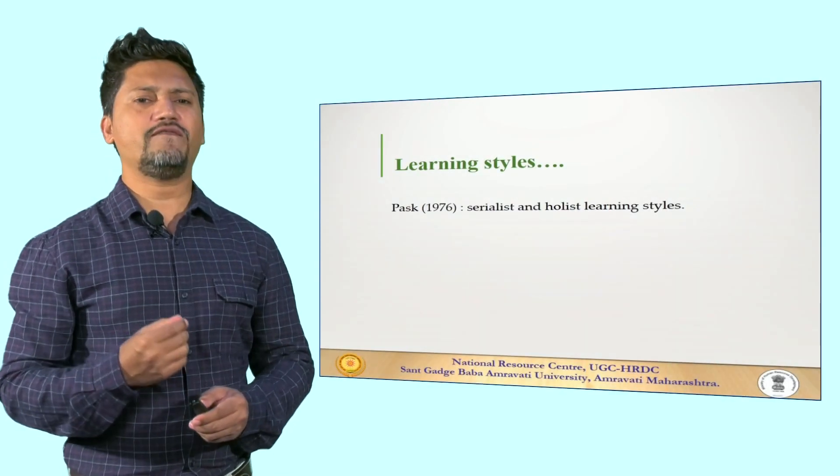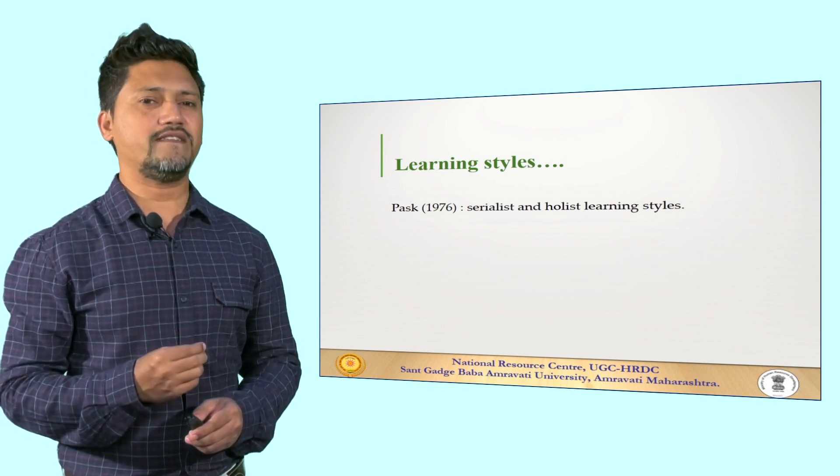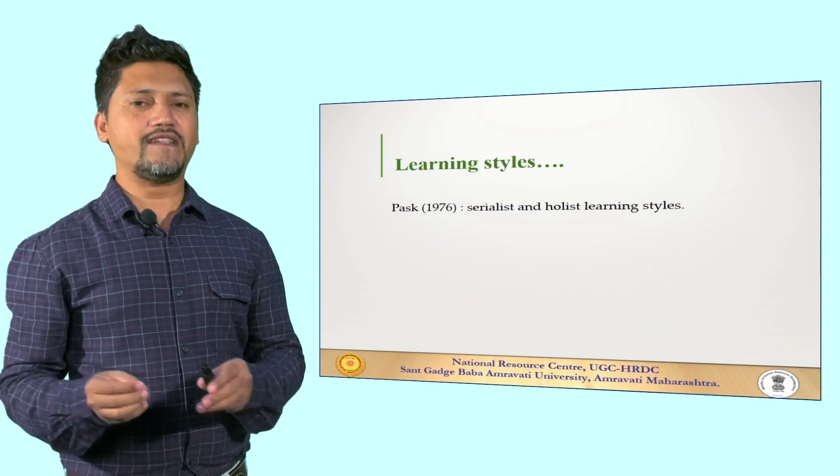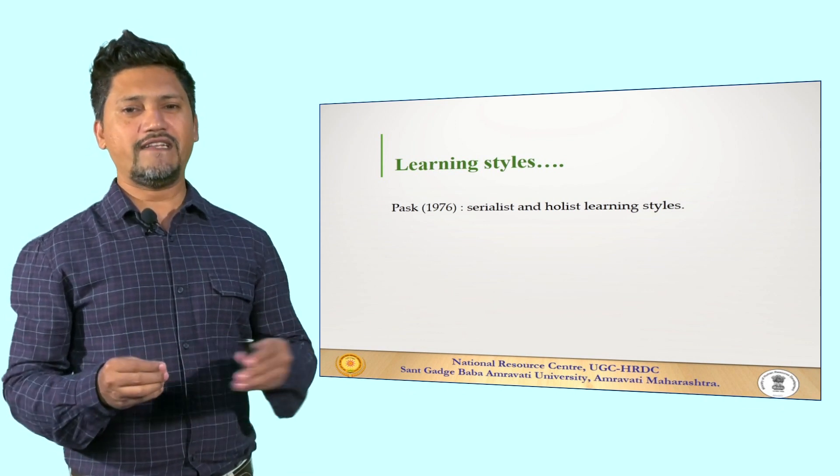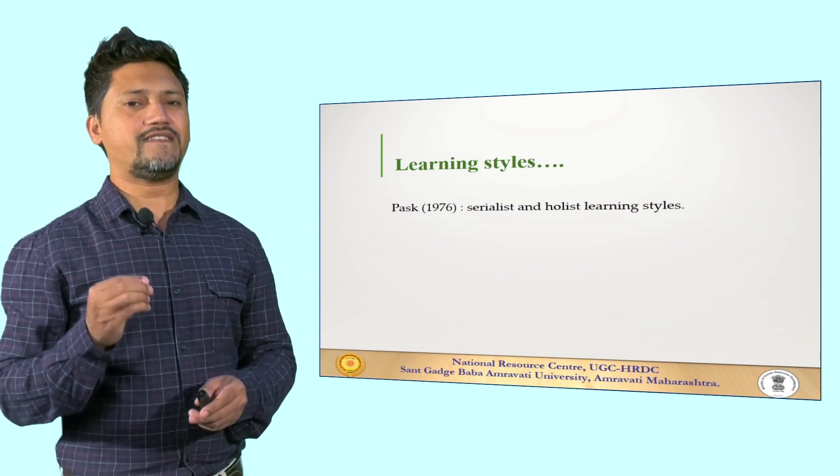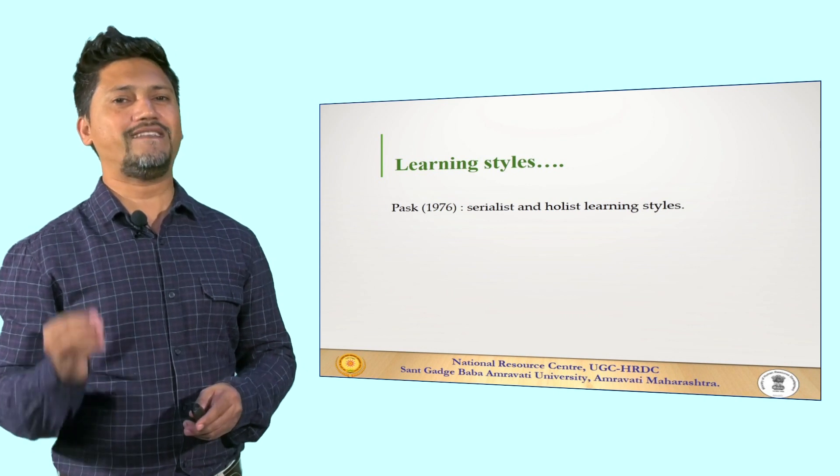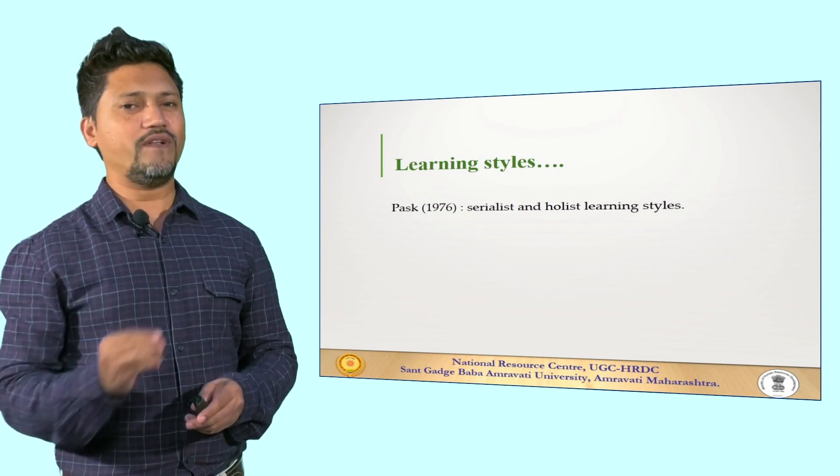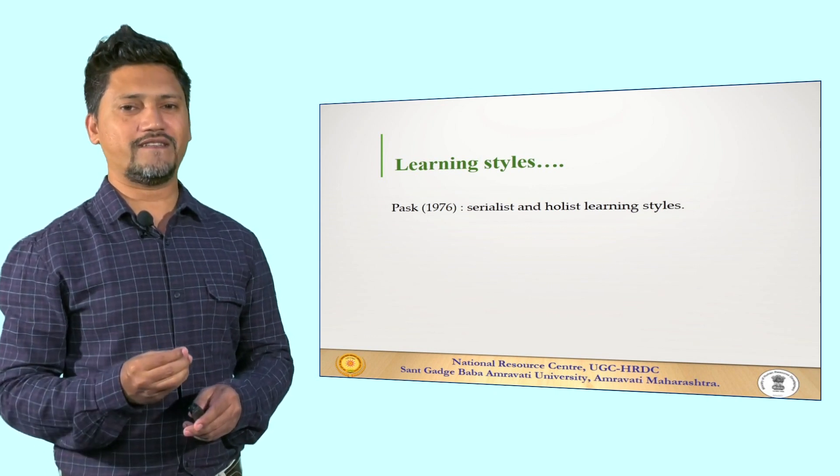To begin with, we have Pasch's categorization of styles in which he categorizes learner styles and learners in two types: serialist and holist. According to Pasch, a serialist is that kind of learner who learns things step by step by step. Whereas a holist is a learner who does not follow a step by step way of learning things.